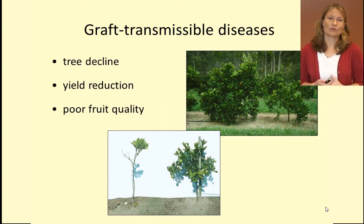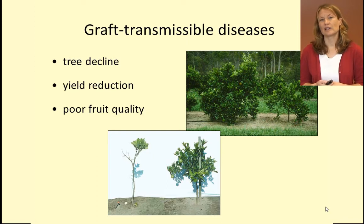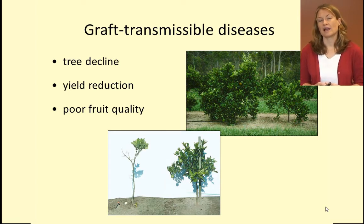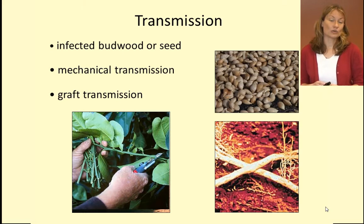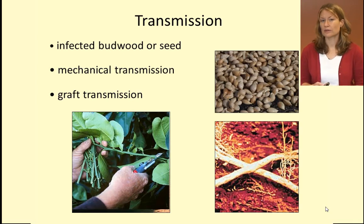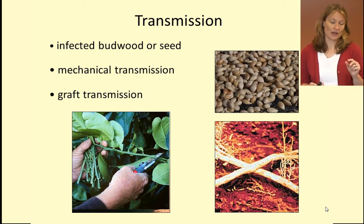Another group of diseases are graft transmissible diseases that can lead to tree decline, yield reduction, poor fruit quality and tree death. The problem with graft transmissible diseases is that there is no cure. They can be transmitted via infected budwood or seed, mechanical transmission via equipment like secateurs or pruning saws, or graft transmission via buds.